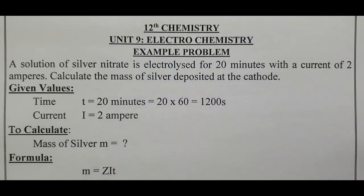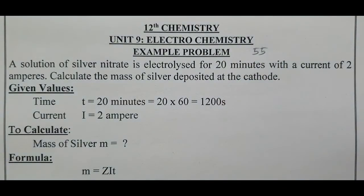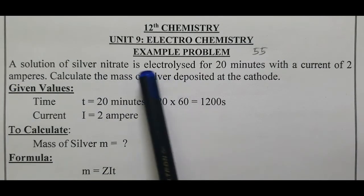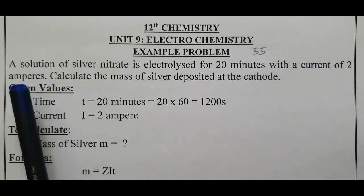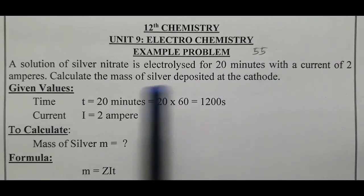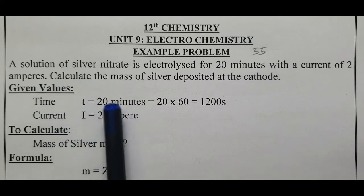Example problem we are going to discuss and this problem is present in page number 55 of second volume. A solution of silver nitrate AgNO3 is electrolyzed for 20 minutes with a current of 2 ampere. Calculate the mass of silver deposited at the cathode.